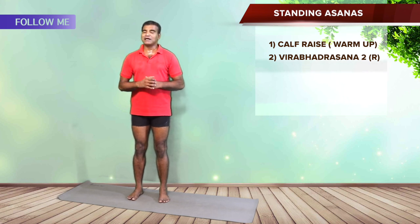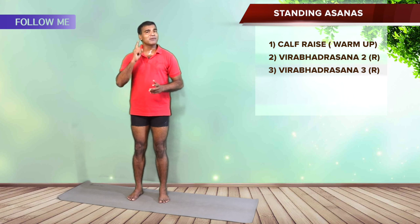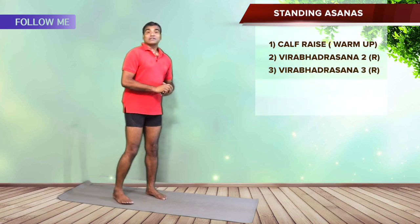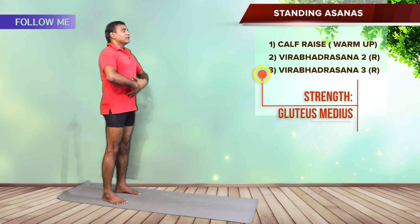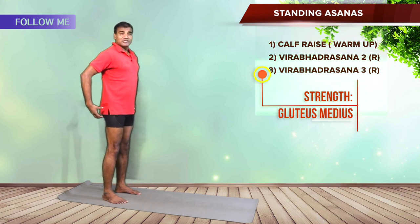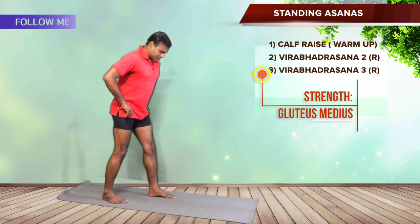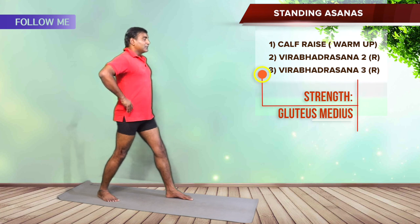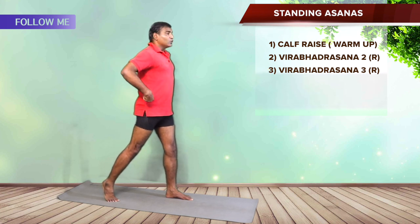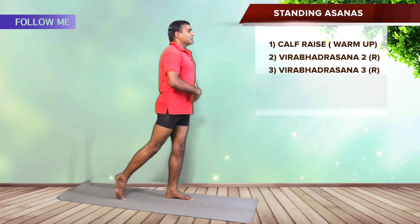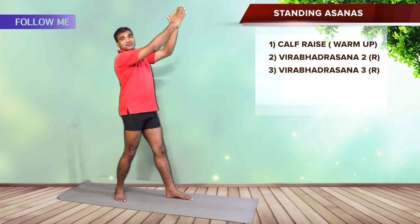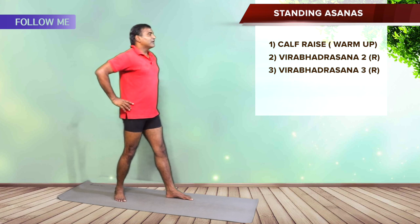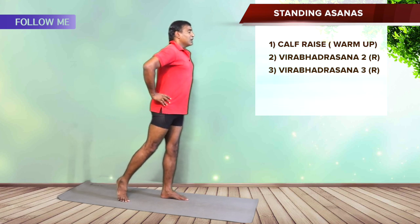Now we are focusing on Veerabhadrasana 3 (Warrior 3), also only on the right side. This posture strengthens the gluteus medius again. Stand tall, abdomen engaged. Because we want to strengthen the right glute, take the left leg forward. Keep the pelvis facing front. Lift up, keep the abdomen engaged — I don't want an anterior tilt, so the core must be engaged to keep the pelvis neutral. Chin tuck, neck and shoulders relaxed. In the full Warrior 3 the hands go straight, but here the focus is solely on strengthening the gluteus, so hands stay on the hips. If you are comfortable, try to hold the position here.